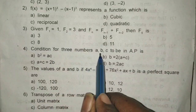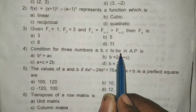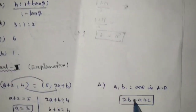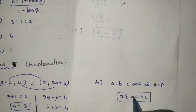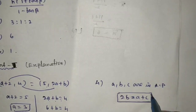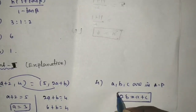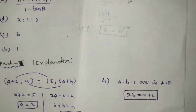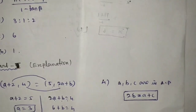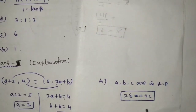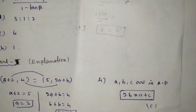Question 4: The condition for three numbers a, b, c to be in AP is that b is the second term, so a plus c equals 2b. This is not from the textbook but an interior question. The answer is the fourth option, A plus C equal to 2B.